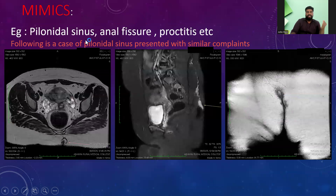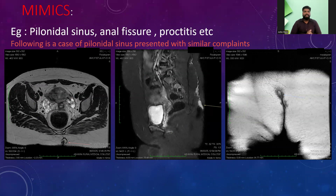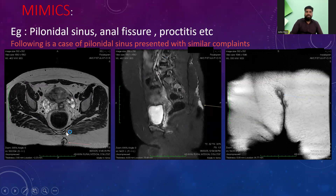Some mimics may clinically present as perianal fistula, but on imaging we can identify them. These include pilonidal sinus or anal fistula or arthritis. We had a patient who presented with similar complaints, but on imaging we found it was not a perianal fistula but, as the arrow mark shows, a pilonidal sinus.